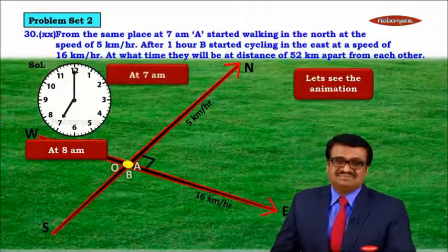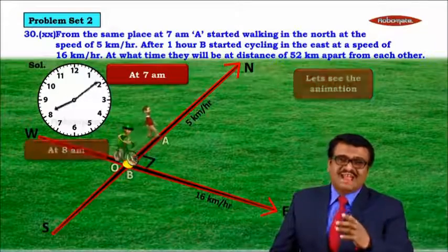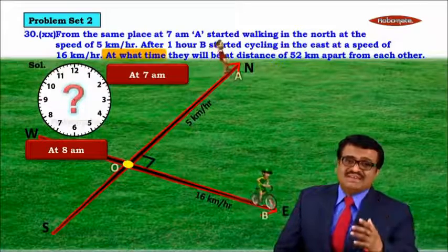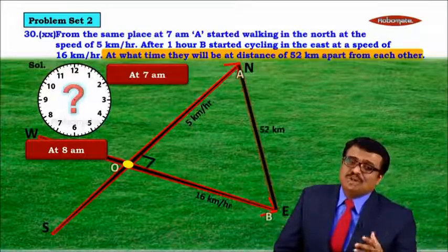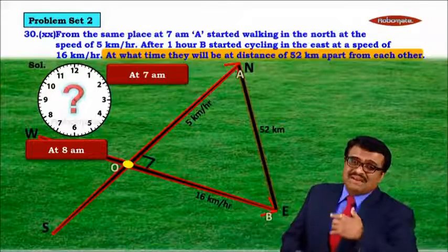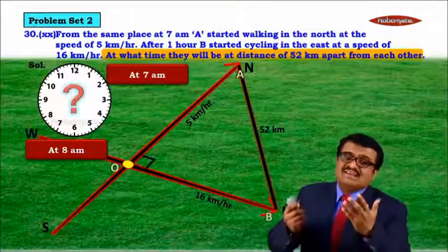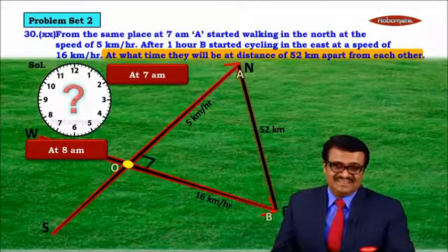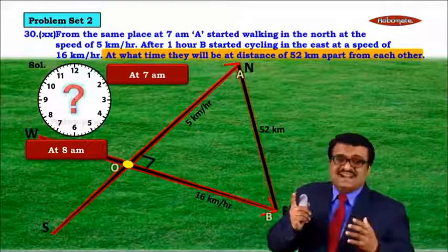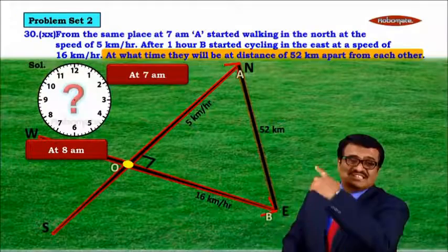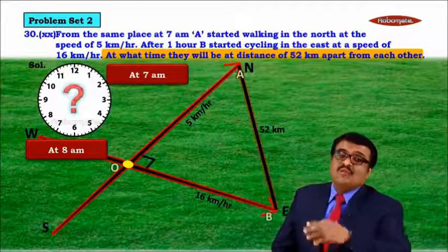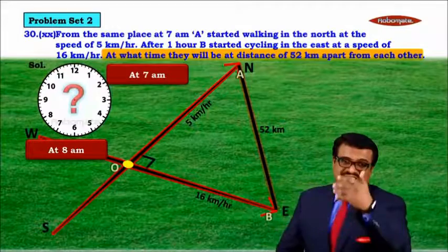At 7 a.m., A started walking north, and at 8 a.m., B started cycling east. The question asks: at what time will they be at a distance of 52 kilometers apart from each other? That is, at what time does the distance between A and B become 52 kilometers?